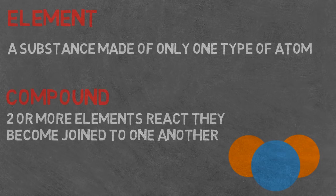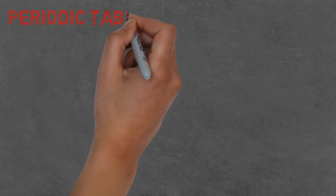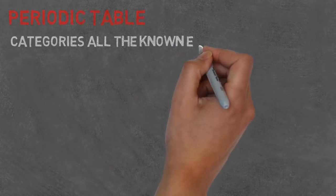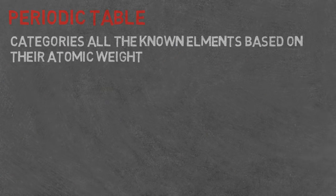The periodic table is a system that categorizes all the known elements based on their atomic weight and if they are metal or non-metal.